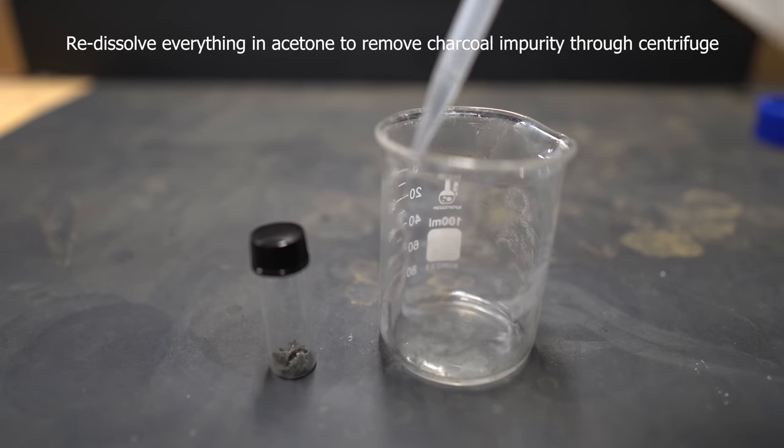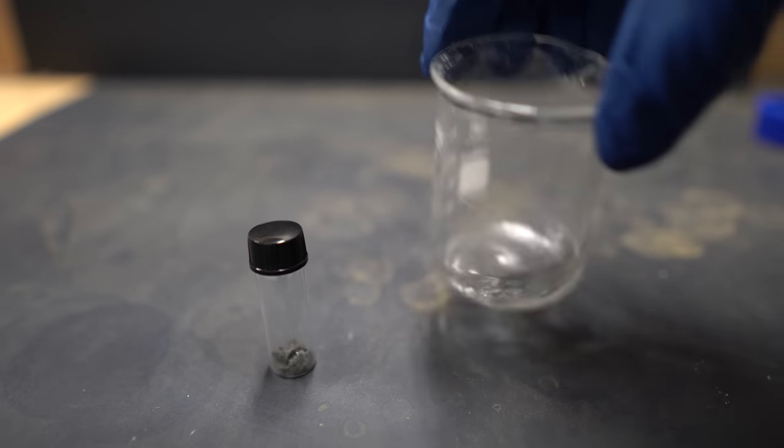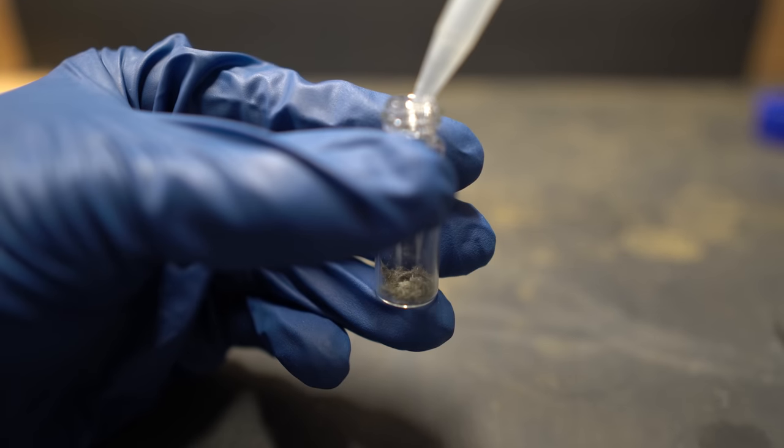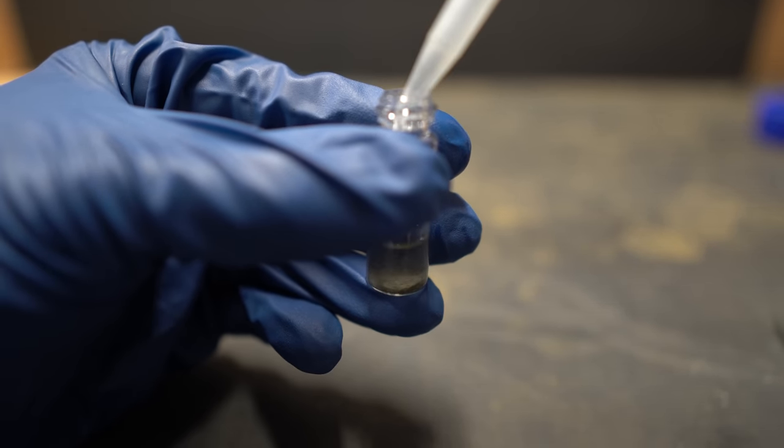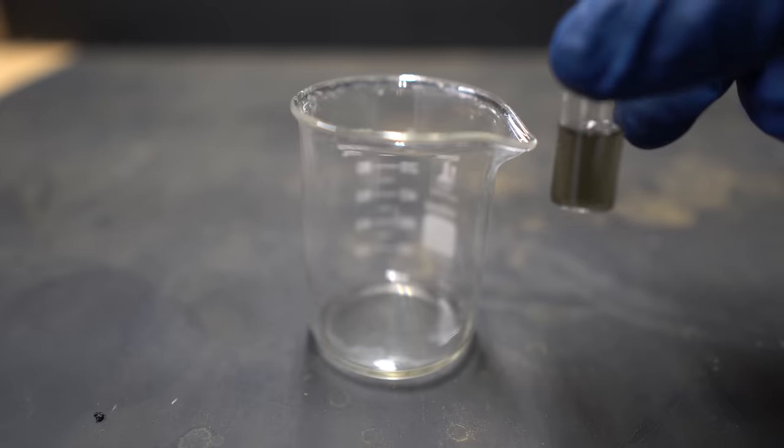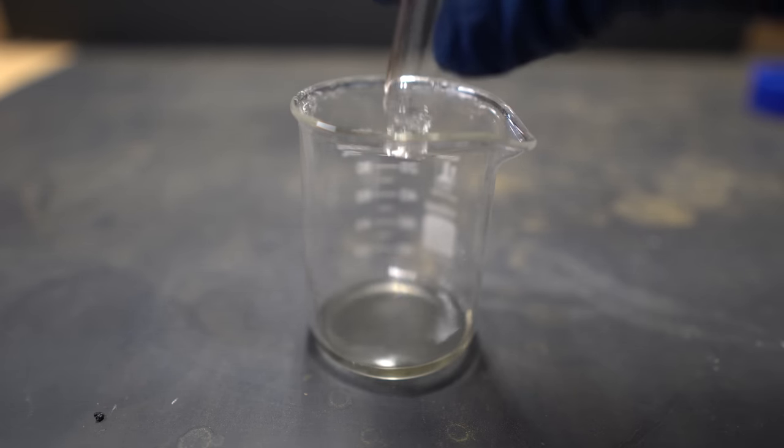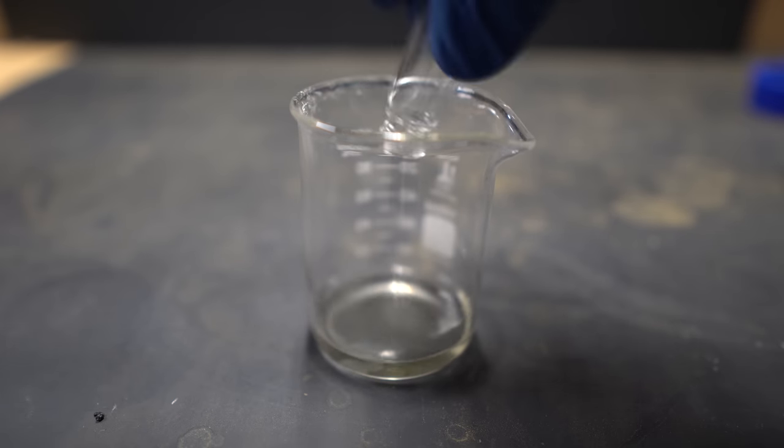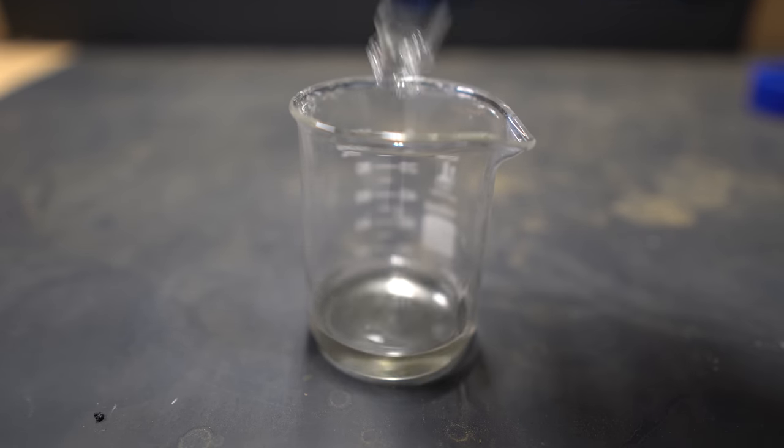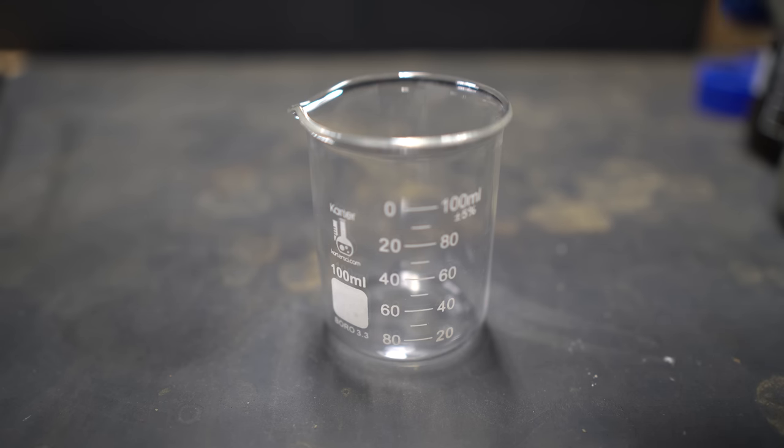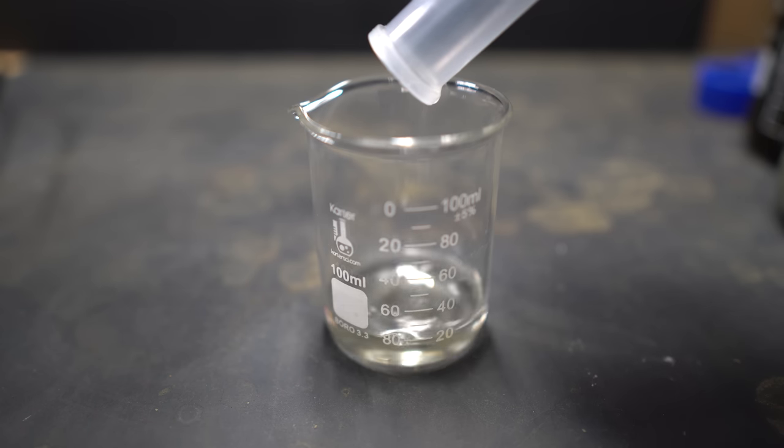I decided to redissolve everything and then we're going to centrifuge again and then recrystallize a second time with some brand new methanol. I made sure to wash the beaker that I used for recrystallization where all the crystals touched and I decided to redissolve all the crystals into acetone again. This way I could dump everything into a tube, centrifuge, pour out the solution, fan evaporate again, and then recrystallize. The interesting part is the crystals actually took a little bit longer to dissolve than the crude product.